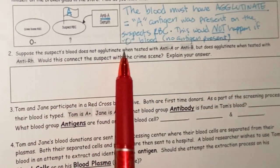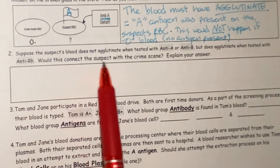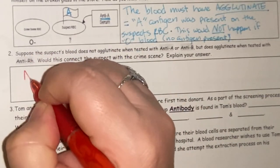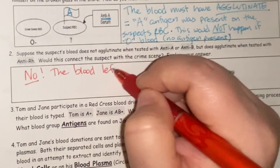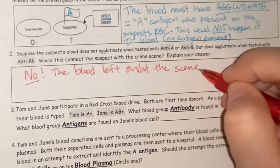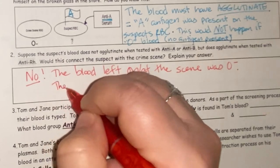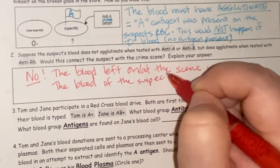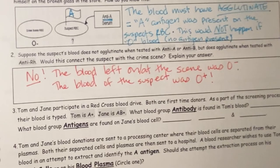Number two: suppose a suspect's blood does not agglutinate when tested with anti-A or anti-B, but does agglutinate when tested with anti-RH. Would this connect the suspect with the crime? The answer is no. The blood left at the scene was O negative. No reaction with anti-A or anti-B means no A or B antigen, but agglutination with anti-RH means there is an RH antigen — so the suspect's blood was O positive. Since the crime scene blood was O negative, they would not be connected.